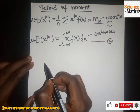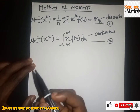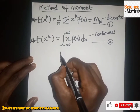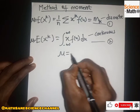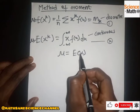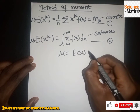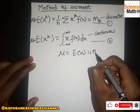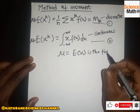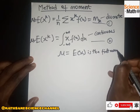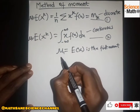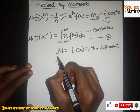Looking at the first moment, mu is given by E[X], so E[X] equals the mean. This is what we refer to as the first moment, which we call u1.